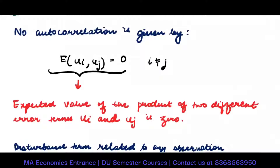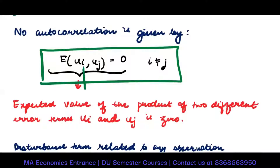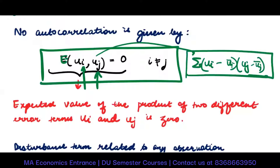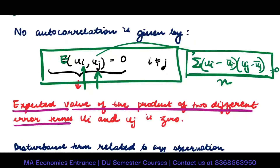No autocorrelation is given by this statement: for two error terms i and j, their expectation E(ui, uj) equals zero. This means that the sum of (ui minus u-bar)(uj minus u-bar) divided by n is zero — they are not correlated to each other. We are saying that the expected value of the product of two different error terms ui and uj is zero.